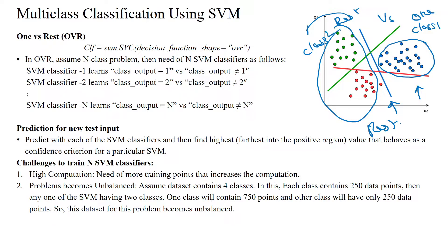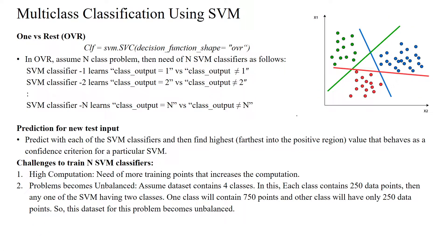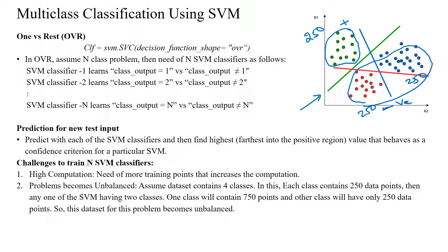One versus rest means one class will be considered at a time, and the rest of all data will be considered as another class. Here we use a minimum number of classifiers compared to one versus one. But there is one limitation: it needs high computation when we have more training data points, and the dataset becomes unbalanced. When taking the green hyperplane, suppose there are 250 data points in that class. All remaining data points are considered as the negative class. If each dataset has 250 data points, then the negative class has 500 samples but the positive class has only 250 samples — so it is unbalanced.